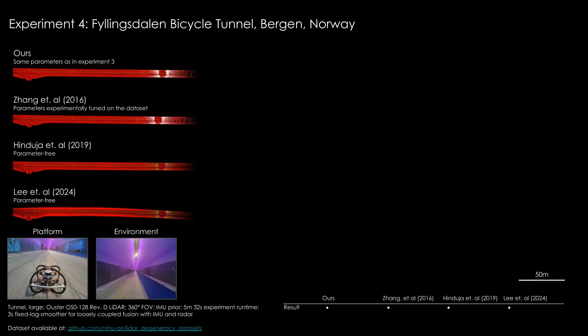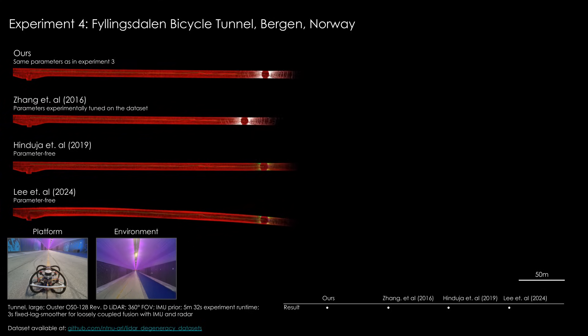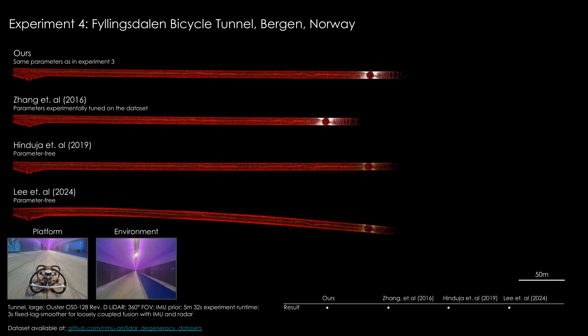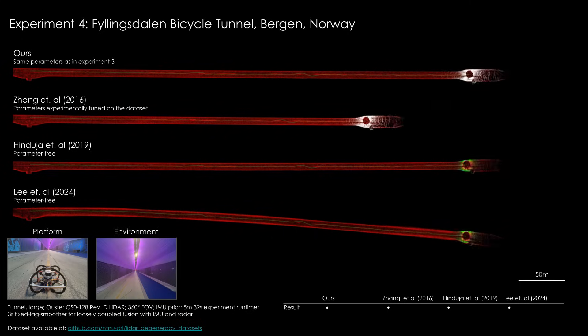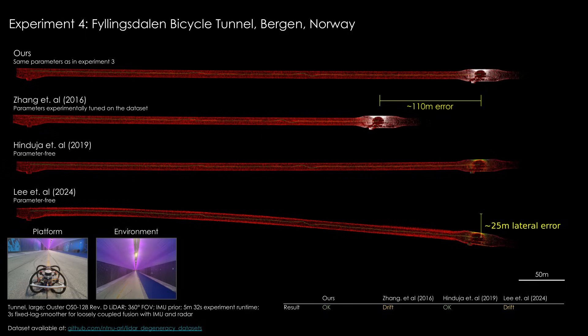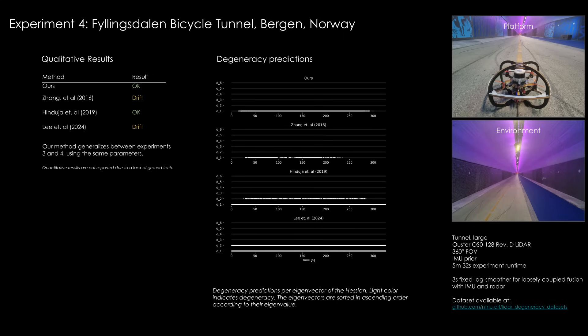In the final experiment, we use a similar robot as in experiment 3. The robot has an Austro O0128 LiDAR, and we use its full field of view. The method of Sangatal underestimates the tunnel segment by approximately 110 meters. The method of Liatal yields significant lateral drift as it erroneously classifies lateral translation as degenerate throughout the experiment. Our method and the method of Hinduatal correctly estimate the length of the tunnel segment to about 500 meters. Our method uses the same parameters as in experiment 3 and successfully generalizes across the two environments.